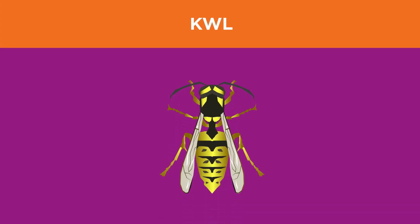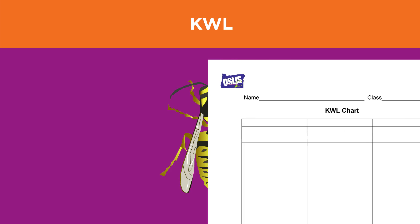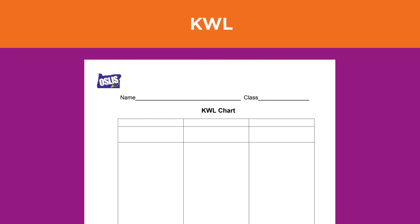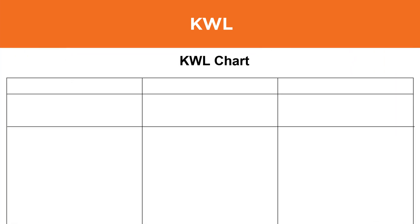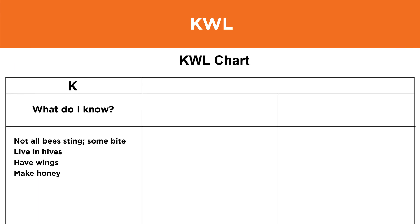Before you get started with your research, think about what you already know about bees. One useful tool for this is a KWL chart. K stands for Know, as in: what do I know? For instance, you may already know that not all bees sting — some bite.